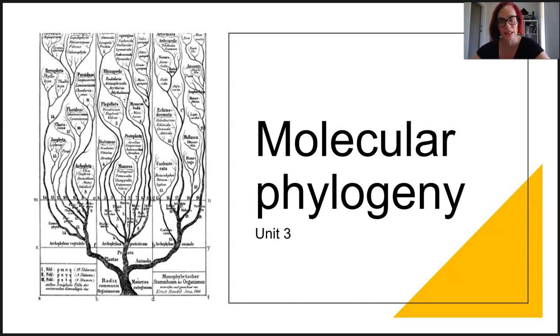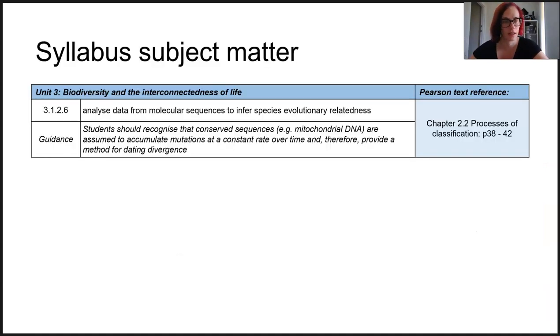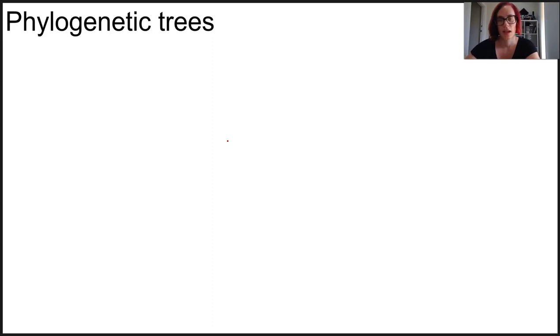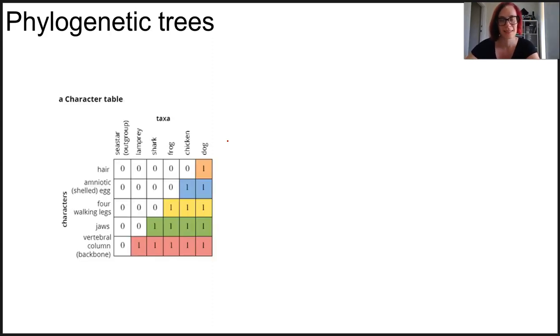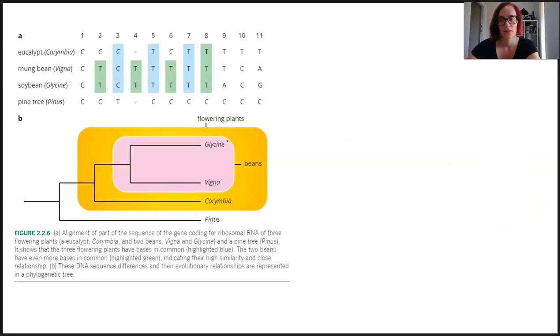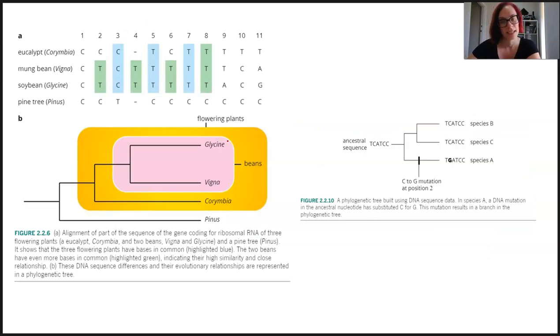We're talking about molecular phylogeny — analysing data from molecular sequences to infer species evolutionary relatedness. We've used physical features and physical traits to build visual representations of evolutionary pathways, but we know this isn't the only way we can classify organisms and organise them. We can achieve a very specific outcome using molecular data.